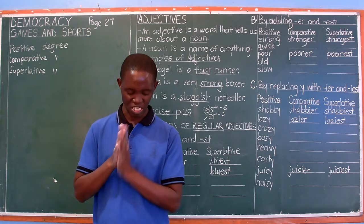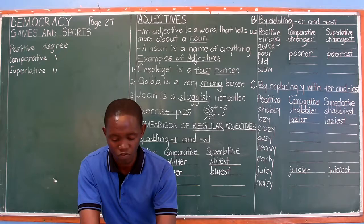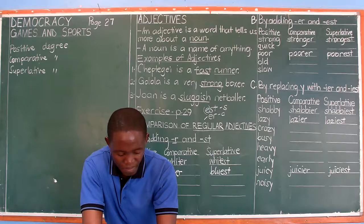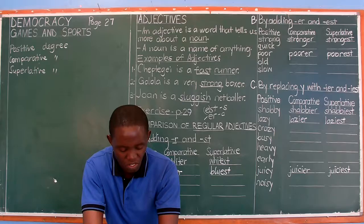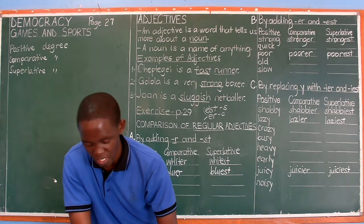You have an activity on page 31 — it also has only 10 questions. You are going to fill in with the correct degree or correct form of the adjective given in brackets. Read and understand the examples given on page 31 before you try answering the questions. It's the end of my lesson — let's meet next time. Goodbye, thanks for watching.